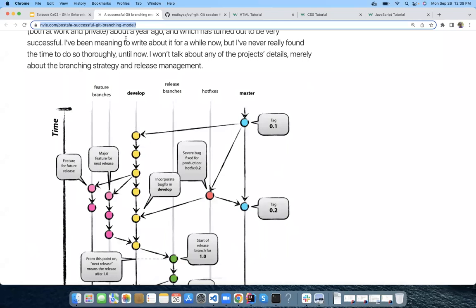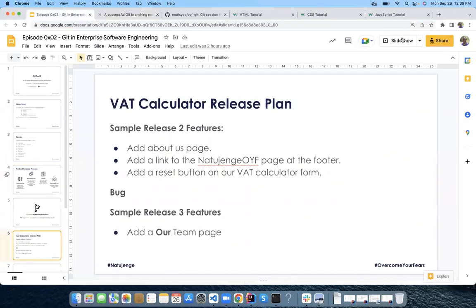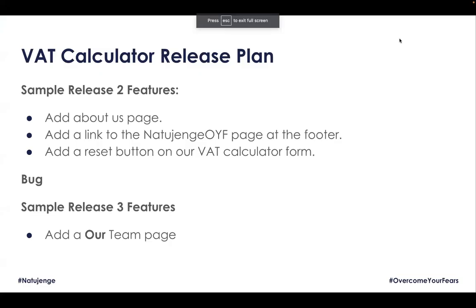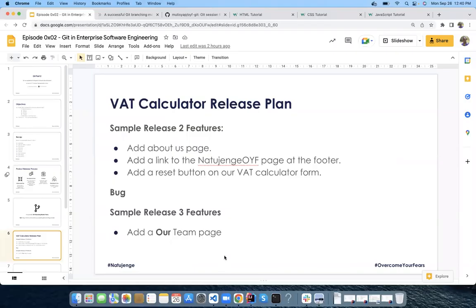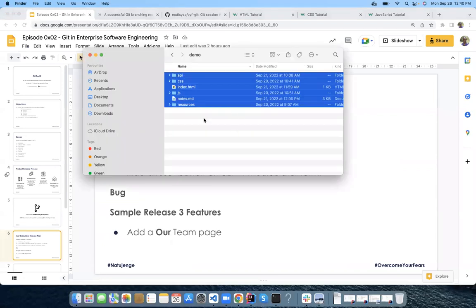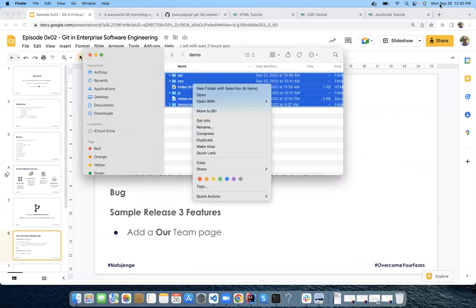The next thing is I'll make a release for our VAT calculator web app, add three features, and showcase how we create the release. Then I'll do a bug fix as a hot fix. After that we'll have release three — the process will be the same as release two, only you keep tagging the main branch accordingly when everything is done. Let's proceed to the live demo.